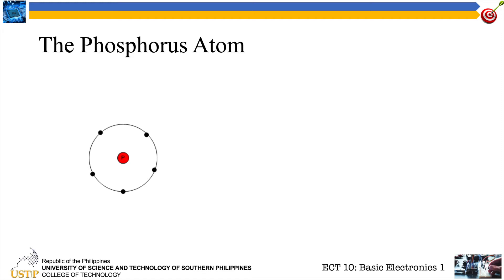Good day everyone. We'll just continue our discussion on semiconductor devices. Last video, I showed you how the silicon atom became one of our very common semiconductor devices for electronics and how it helped our world of electronics today. Right now, I'm going to continue the discussion by introducing another atom that can be found in our periodic table of elements.